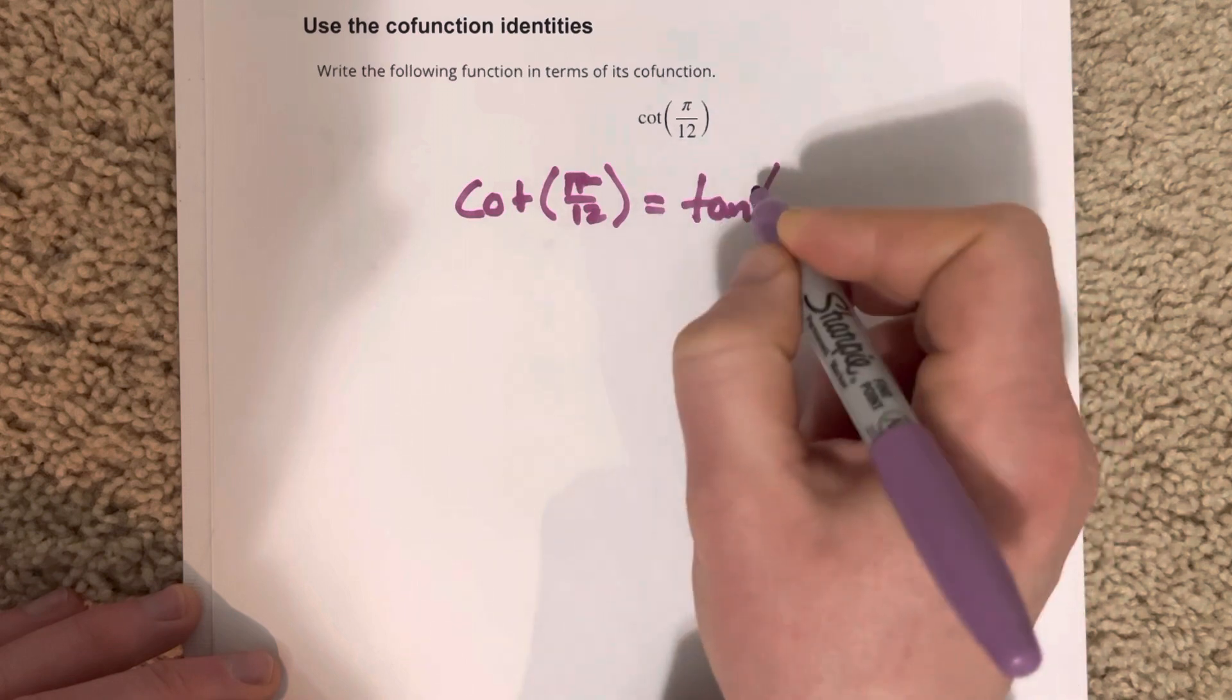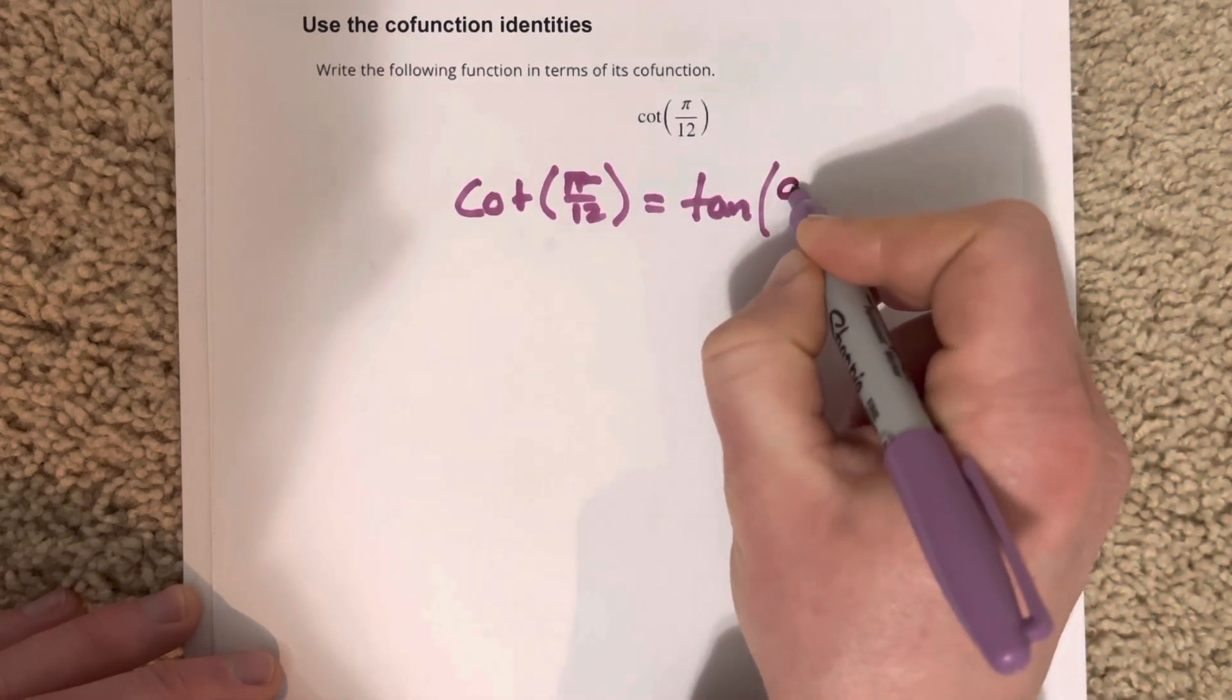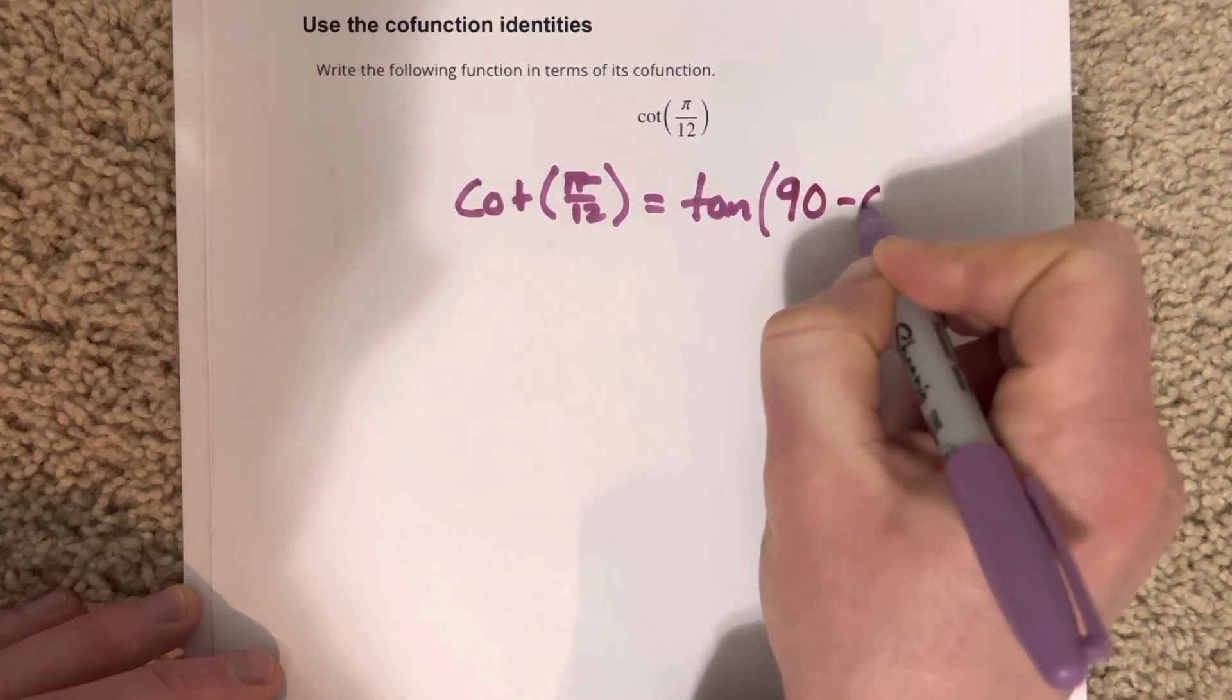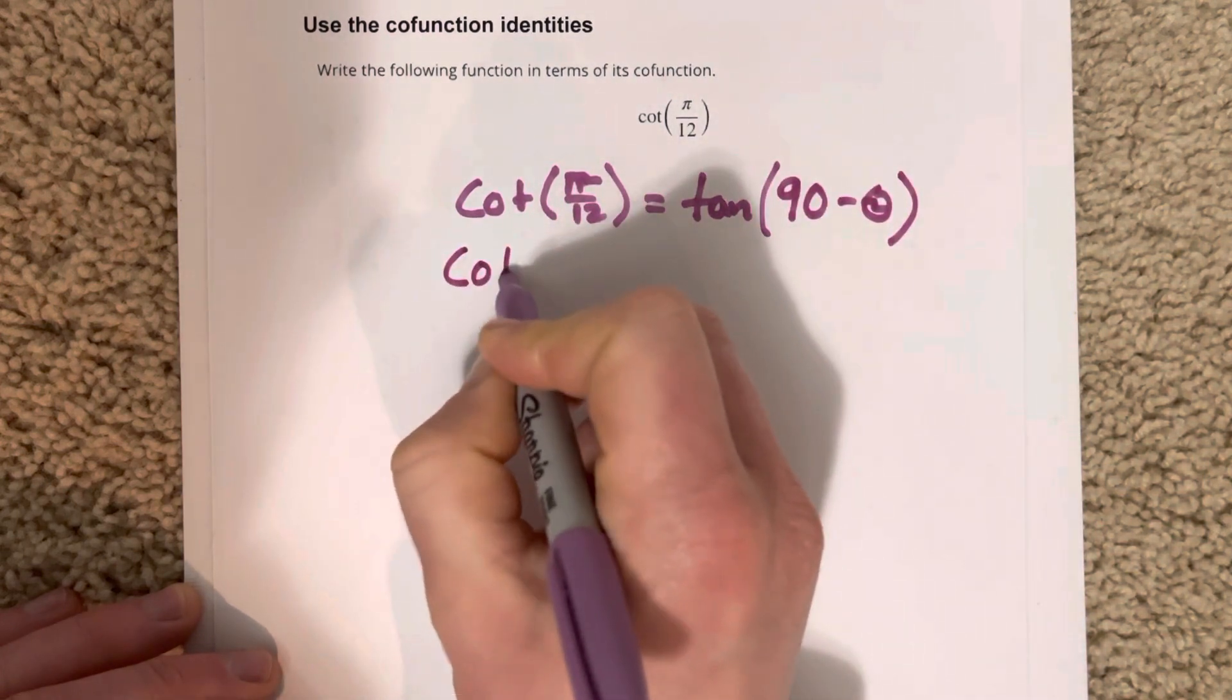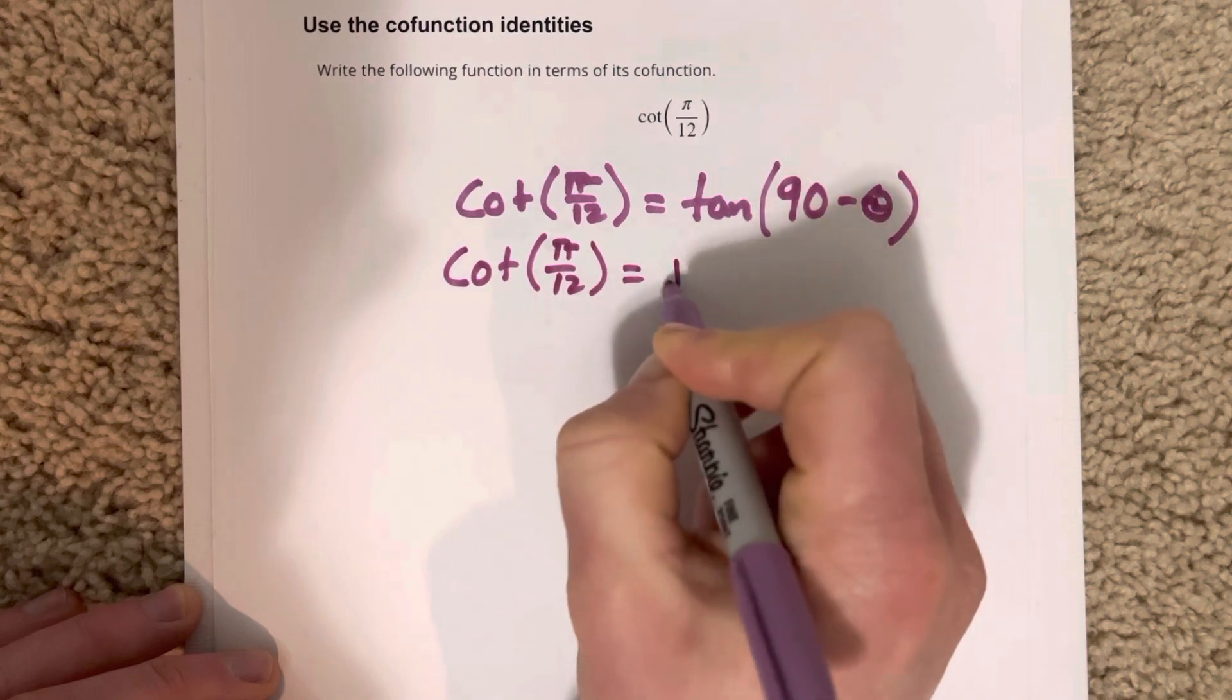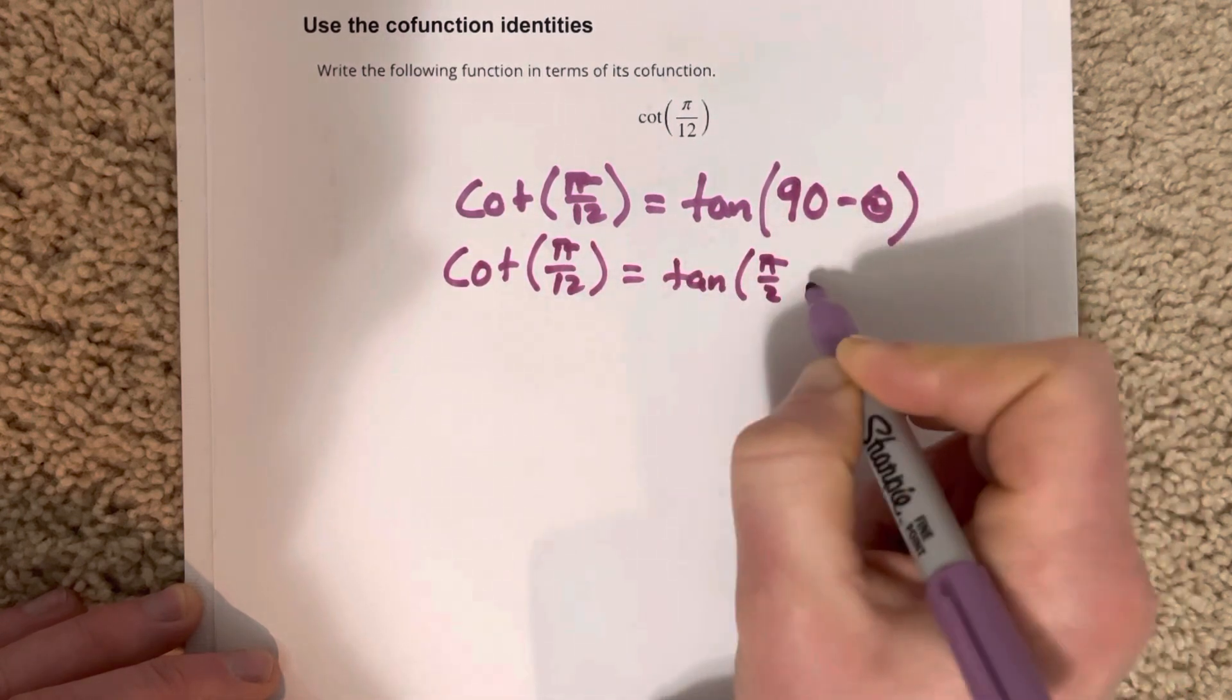So the formula for this tangent piece would be tangent of 90 minus theta typically. But we're going to use, because we're in radians here, tangent of pi over 2, which is 90 degrees, minus theta.